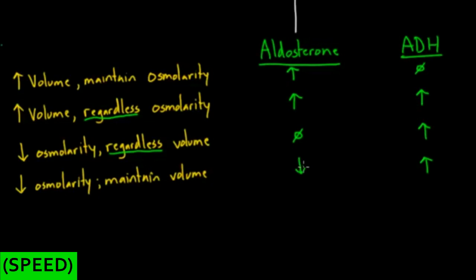Now you can see how the two hormones basically have to work together to get the different outcomes, depending on what your volume status is and what your osmolarity status is. And I could flip around all the arrows. I could say well what about decreased volume and maintain osmolarity or decreased volume regardless of osmolarity. And you would basically just do the opposite of all these things. So you can see how really any tweak in volume and osmolarity can help you predict what the aldosterone and ADH will be doing.